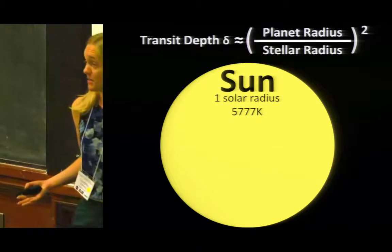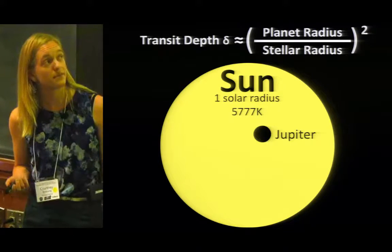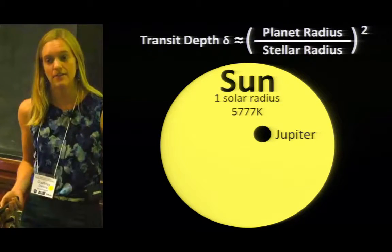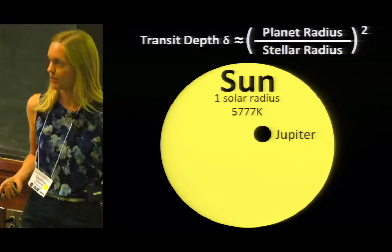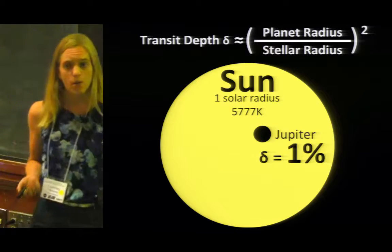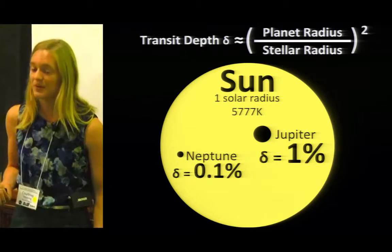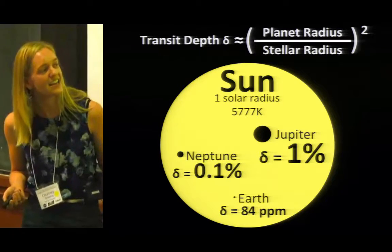So now we're going to put numbers on this. We have a star like the Sun, and we have a planet like Jupiter. And for a planet like Jupiter, the planet star radius ratio is such that we would expect a decrease in brightness of 1%. For something like Neptune, we get 0.1%. And for the Earth, we're left with a shockingly tiny 84 parts per million.